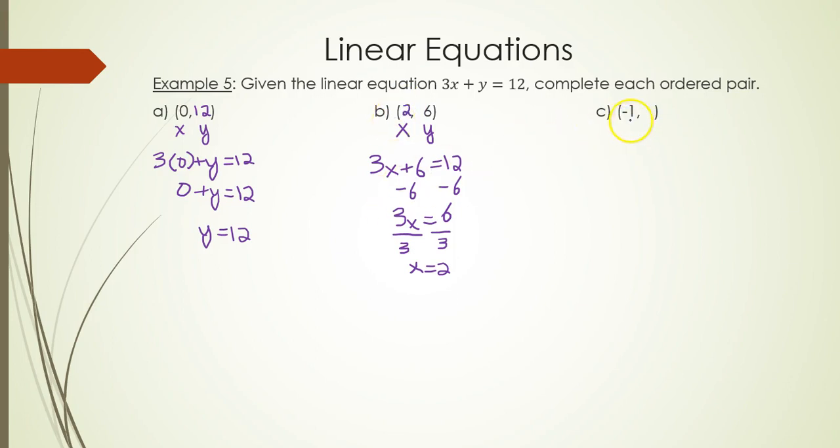Part C. -1 is x. What is the coordinate we need for y to satisfy the equation and find the full ordered pair? Well, 3 times -1 + y = 12. -3 + y = 12. Add 3 to both sides.